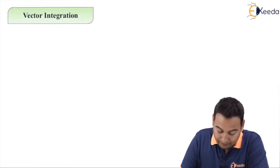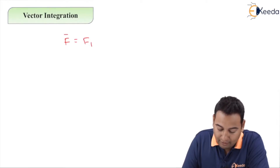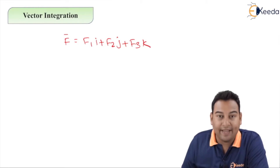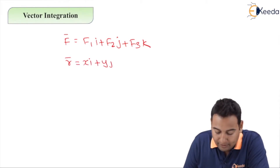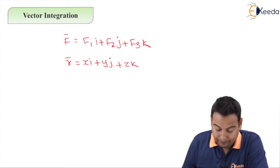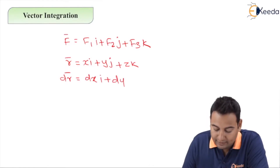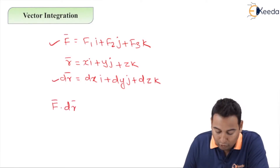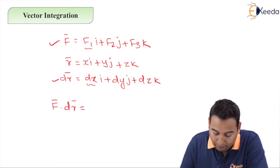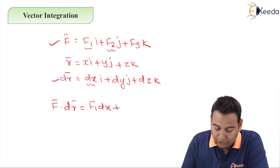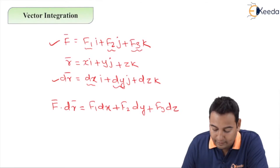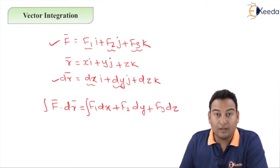Suppose F̄ is a given vector: F̄ = F1·i + F2·j + F3·k. As discussed, r̄ = xi + yj + zk, so dr̄ = dxi + dyj + dzk. Taking the dot product F̄·dr̄ gives F1·dx + F2·dy + F3·dz. Taking the integration of this is called work done.